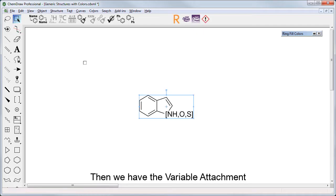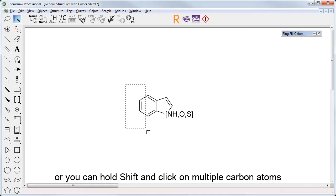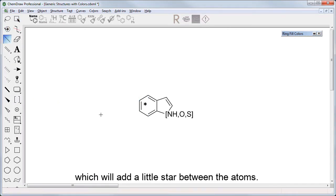Then we have the variable attachment. You select specific carbons with any selection tool, or you can hold Shift and click on multiple carbon atoms. You then go to Structure, Add Variable Attachment, which will add a little star between the atoms.